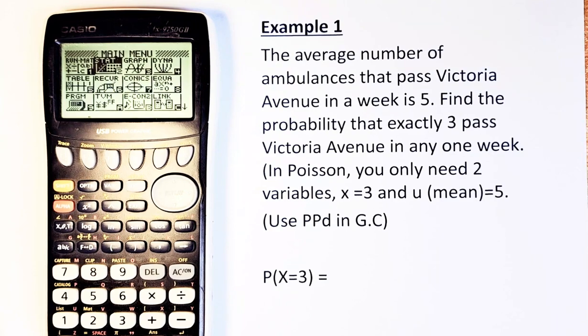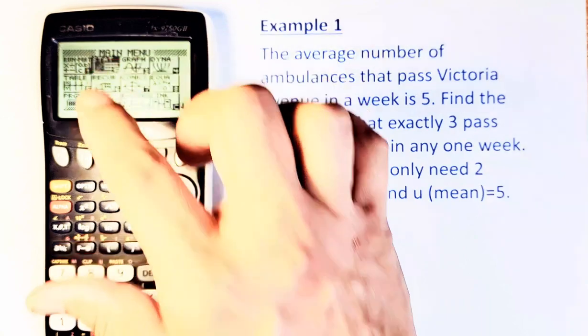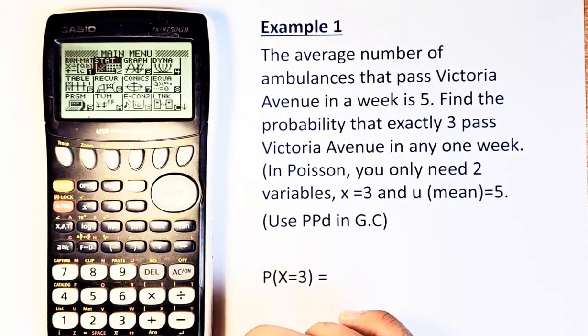In this case, it's going to be PPD. So first, go to your graphic calculator, go to Stats, which is the second button there. Then you press the Execute button.